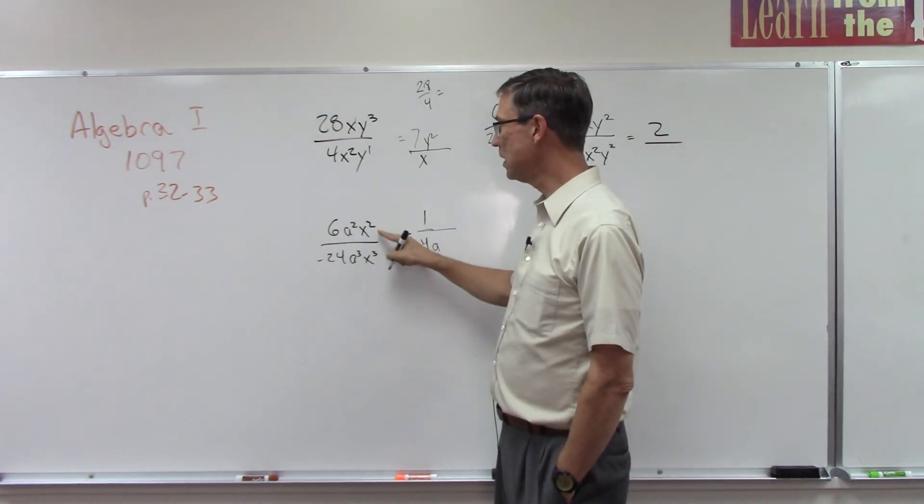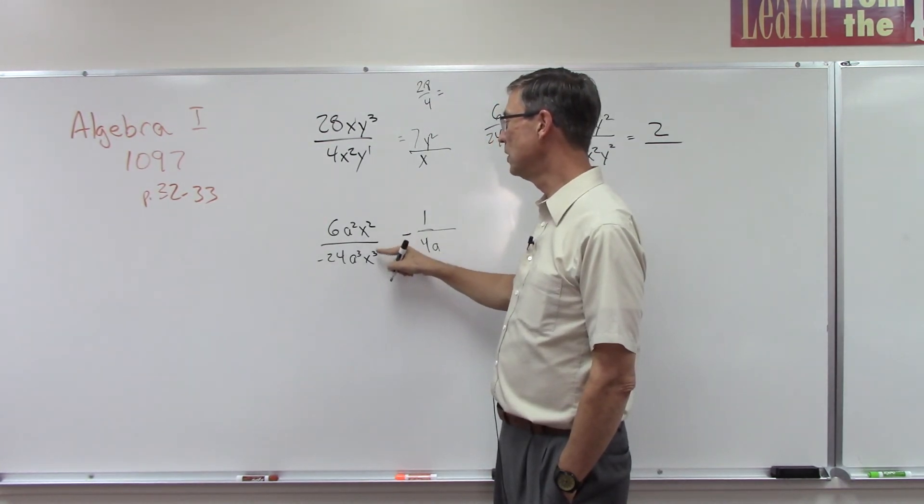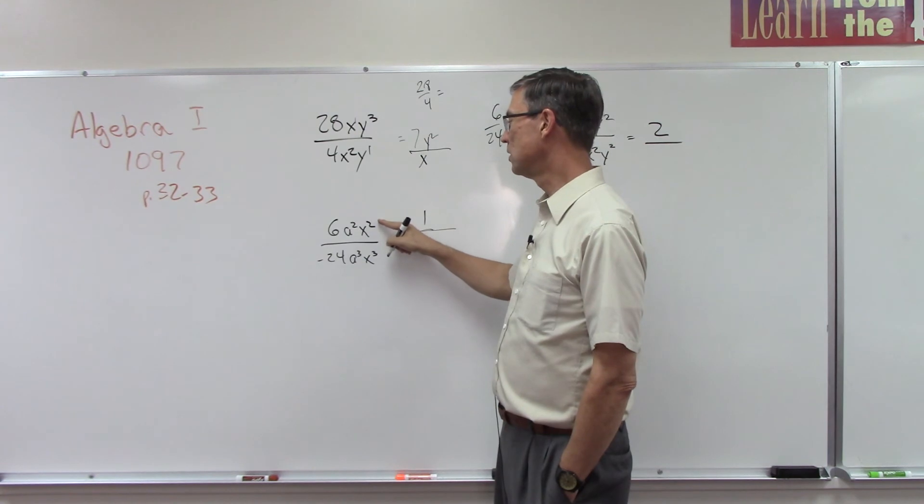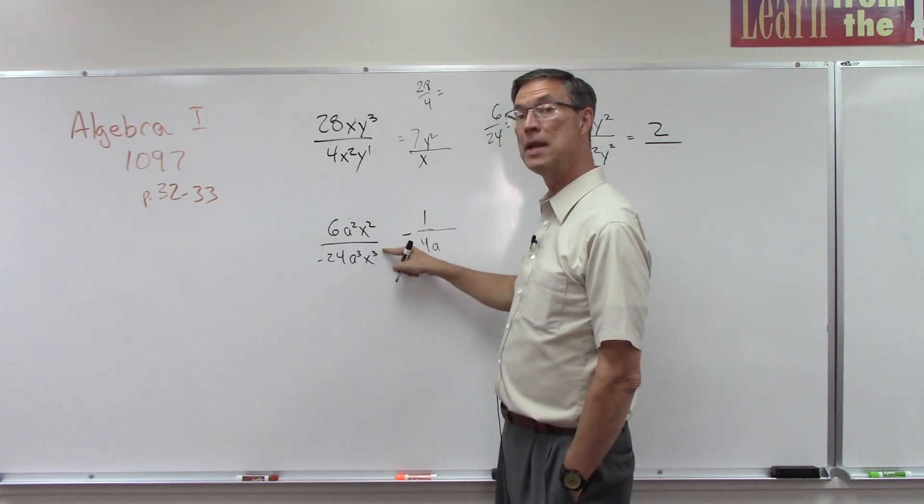And then let you finish by doing this last one. Do the same thing with x. We have x to the third on the bottom, x squared on the top. So again, subtract the smaller from the larger, keep the answer on the, in this case, the denominator.